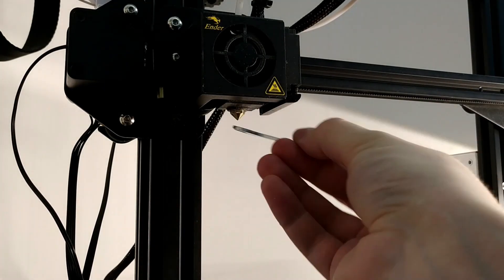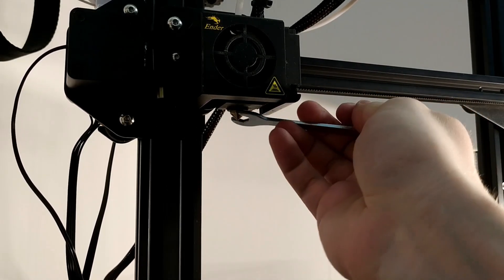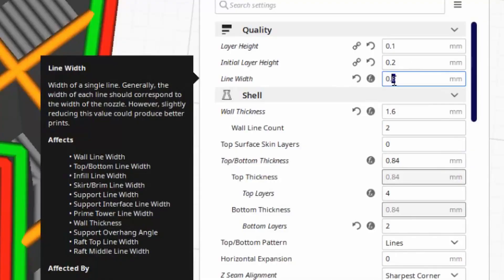Then you need to re-level your bed, change the line widths in your slicer, and you should also calibrate for the new nozzle to get the most of the quality.